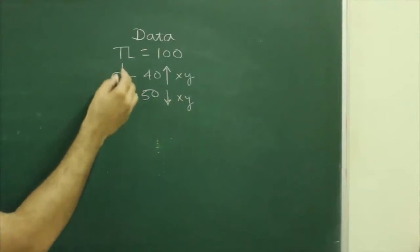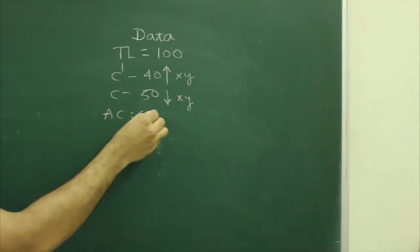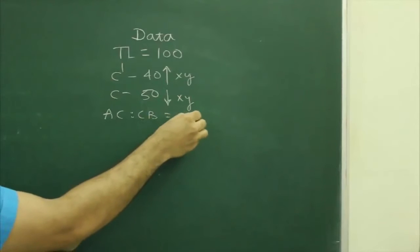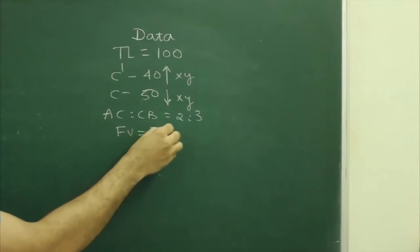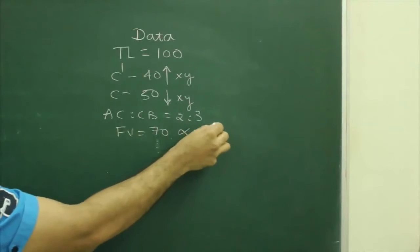And c into xy line, that given AC equal to CB equal to 2 is to 3, that given front view which is 70 and alpha which is 60.